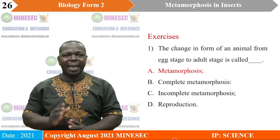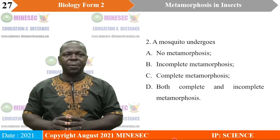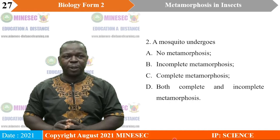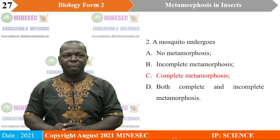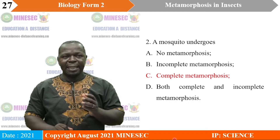A mosquito undergoes — A. No metamorphosis, B. Incomplete metamorphosis, C. Complete metamorphosis, D. Both complete and incomplete metamorphosis. A mosquito undergoes complete metamorphosis, so C is the correct answer. The development involves four stages: the egg stage, the larva stage, the pupa stage, and the adult stage.